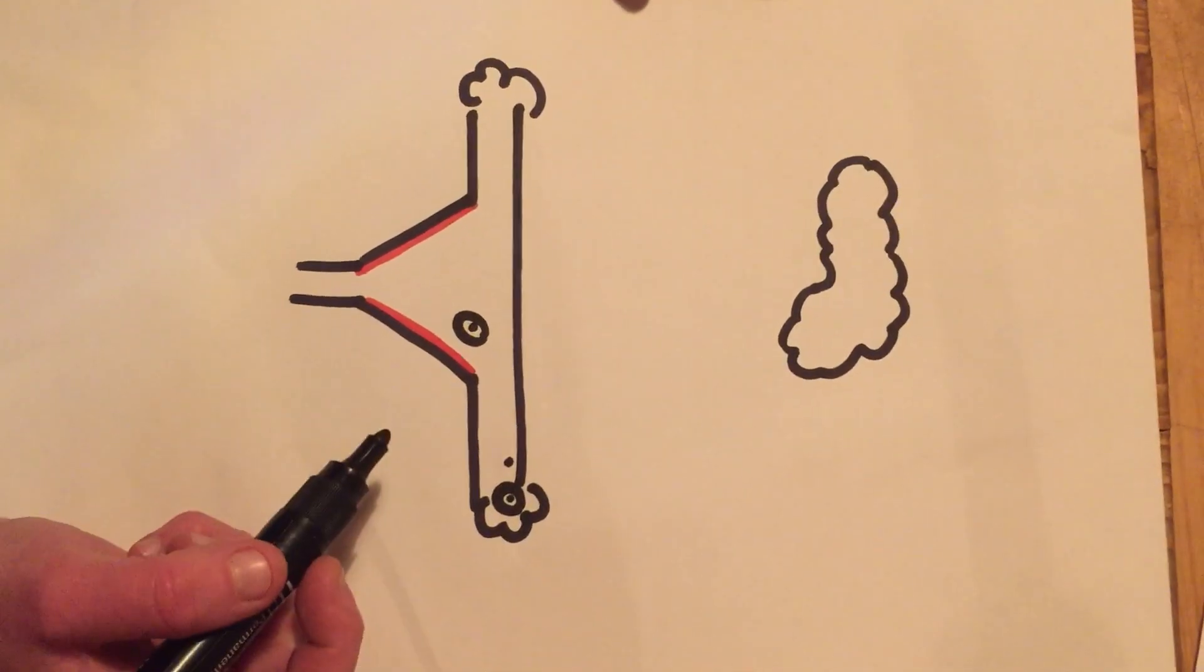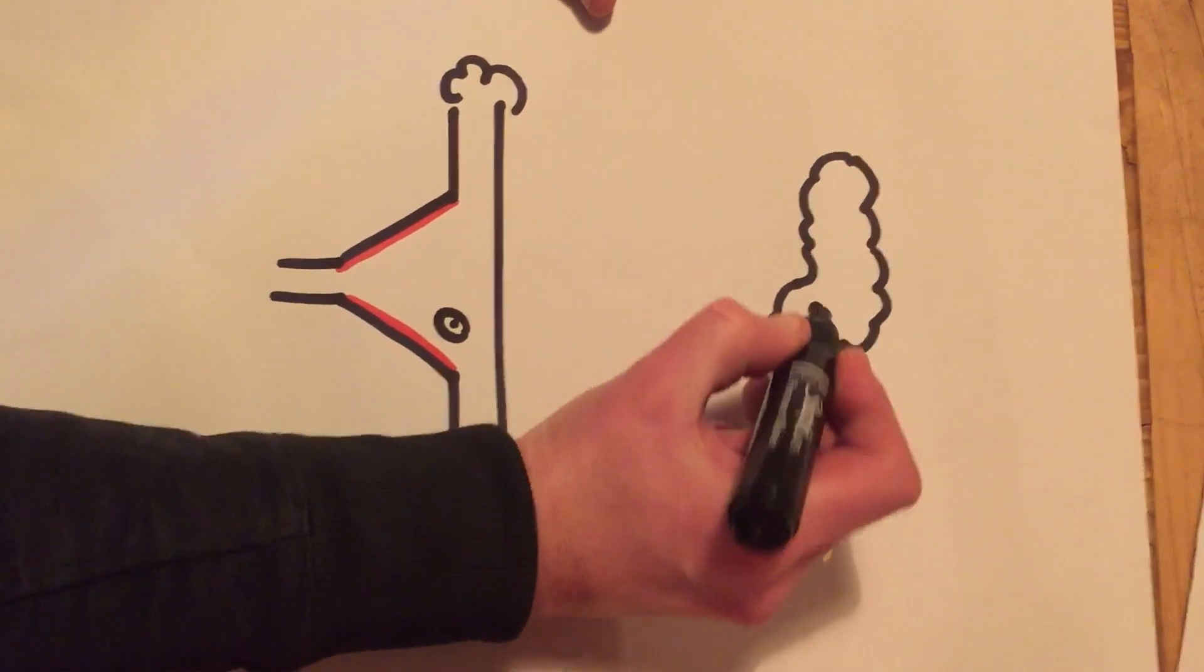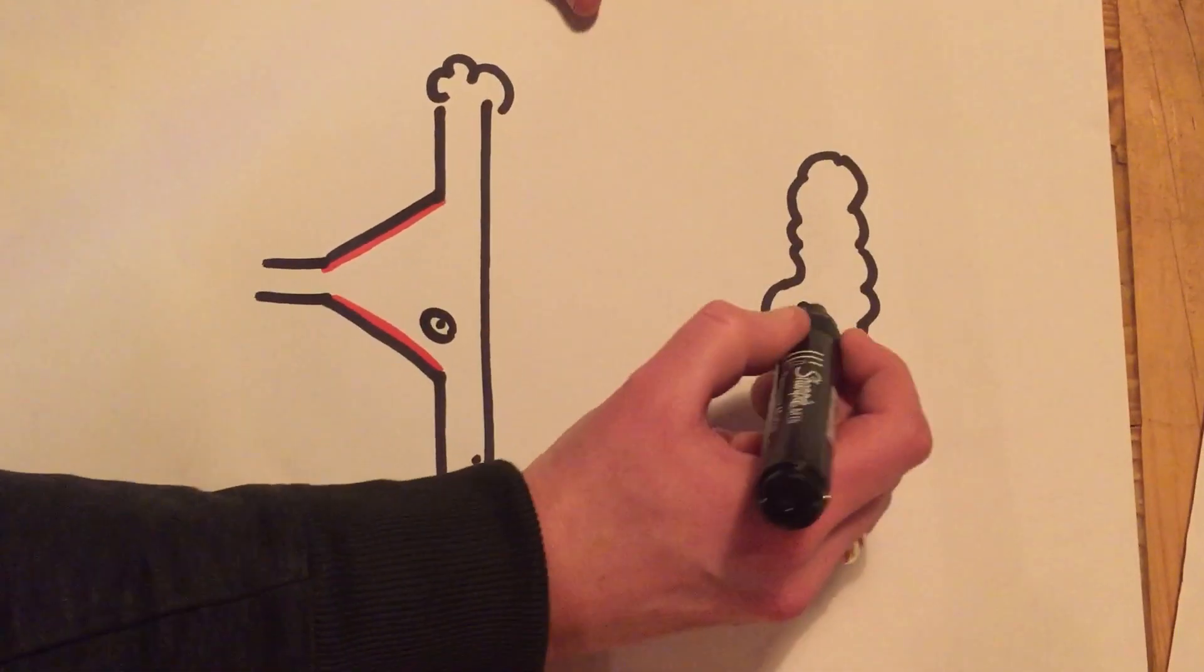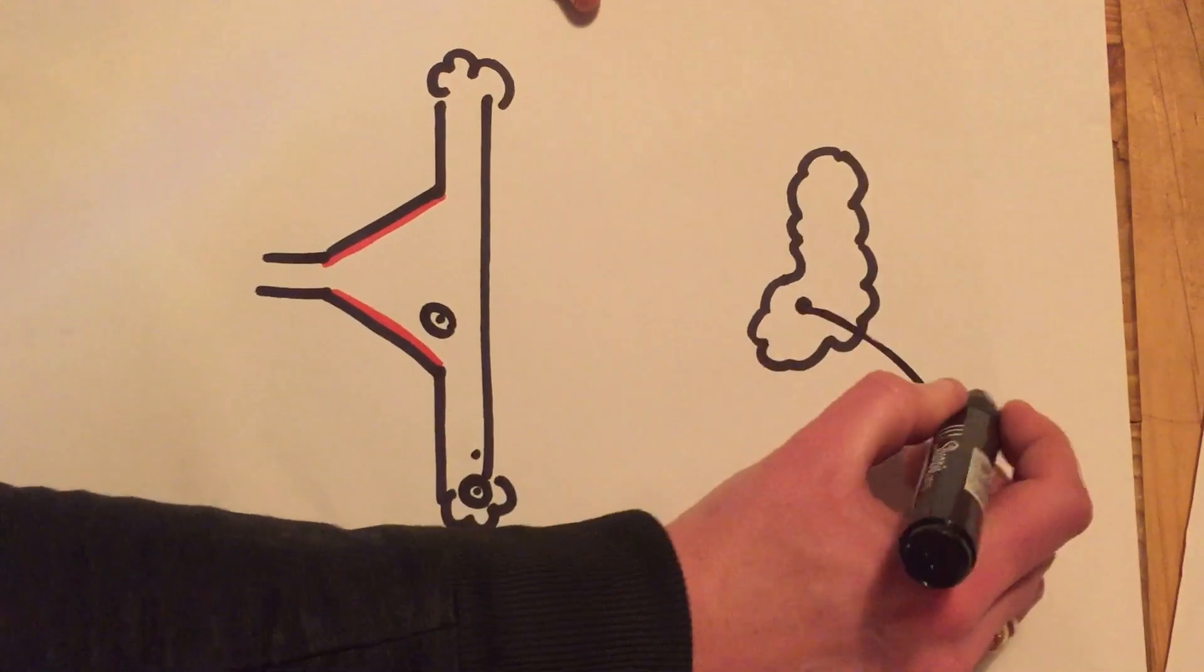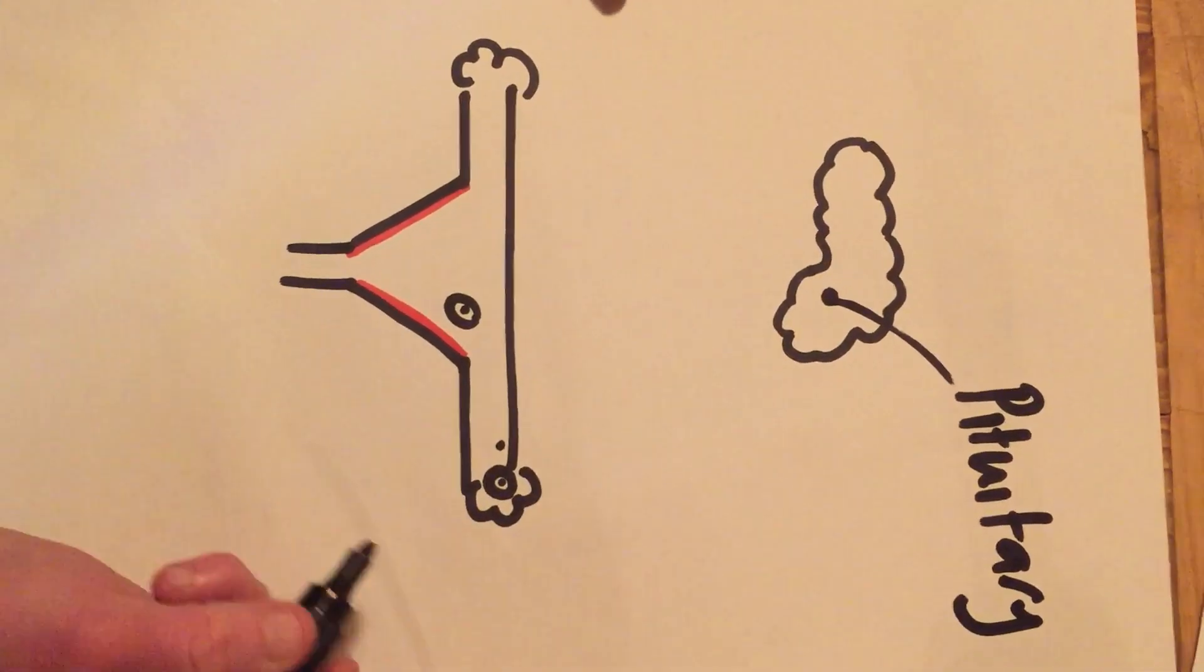I'm going to teach you how to do the menstrual cycle. So here we've got the brain, and we've got a small part, a bit like a P, and it's P for P brain and P for pituitary. That's a gland that will release our first hormone.